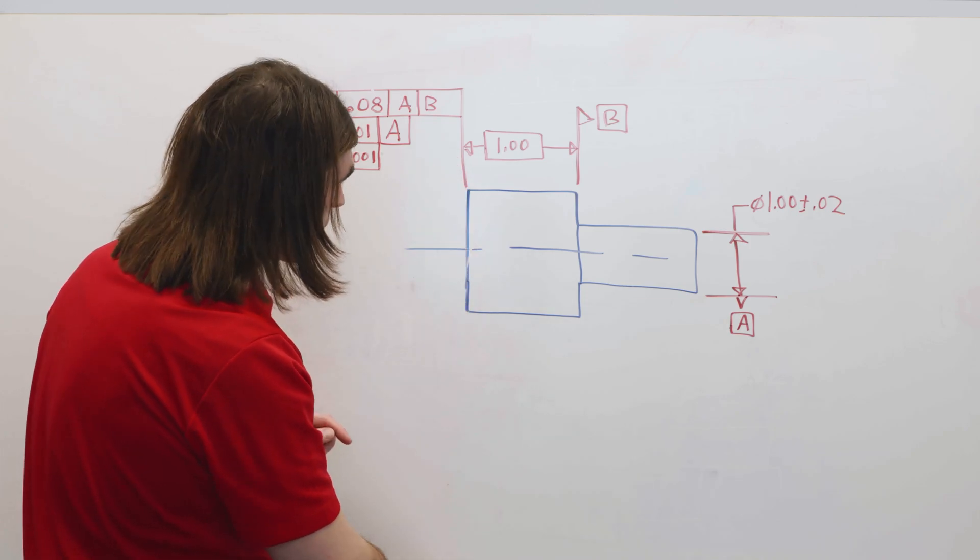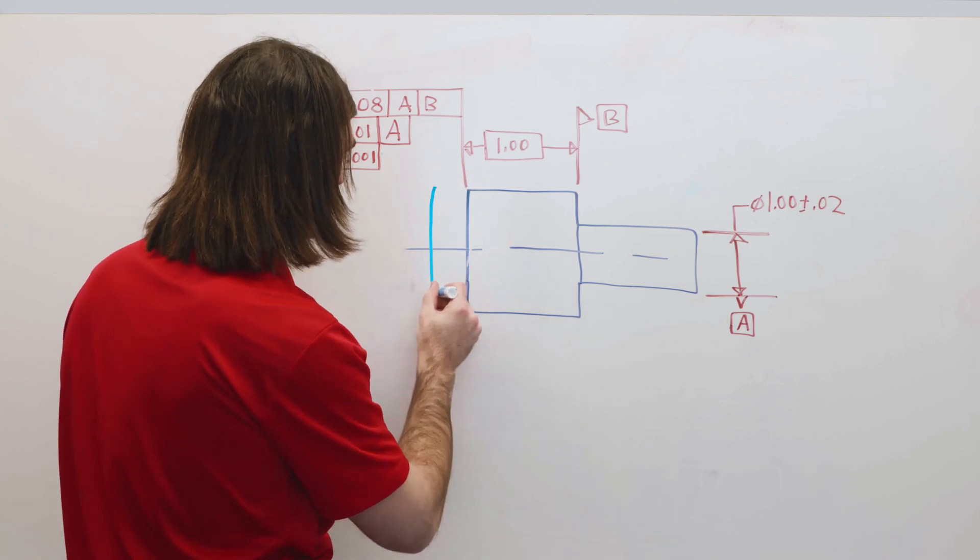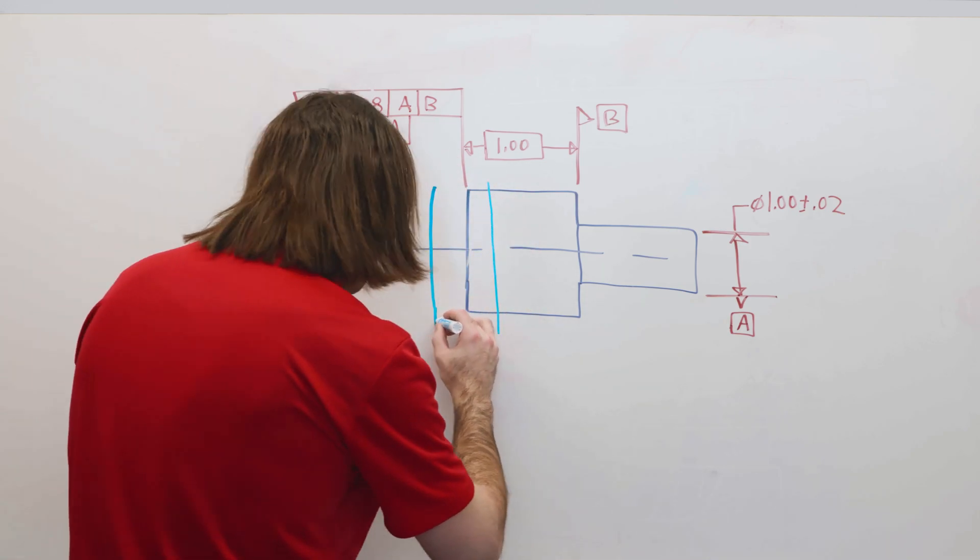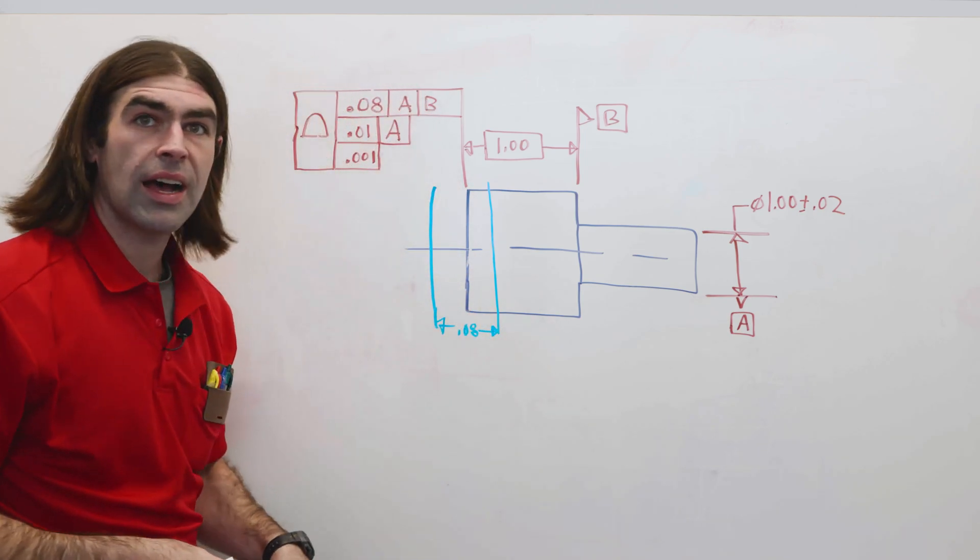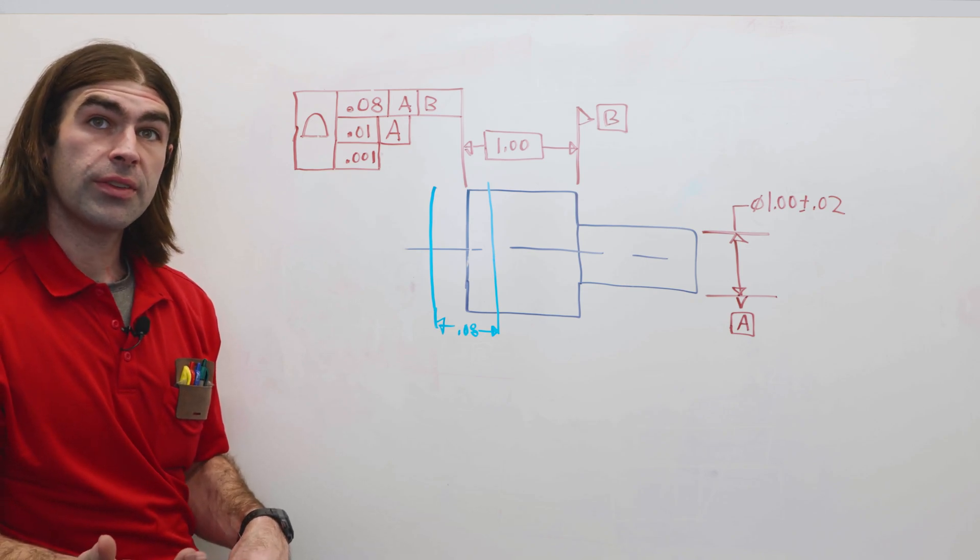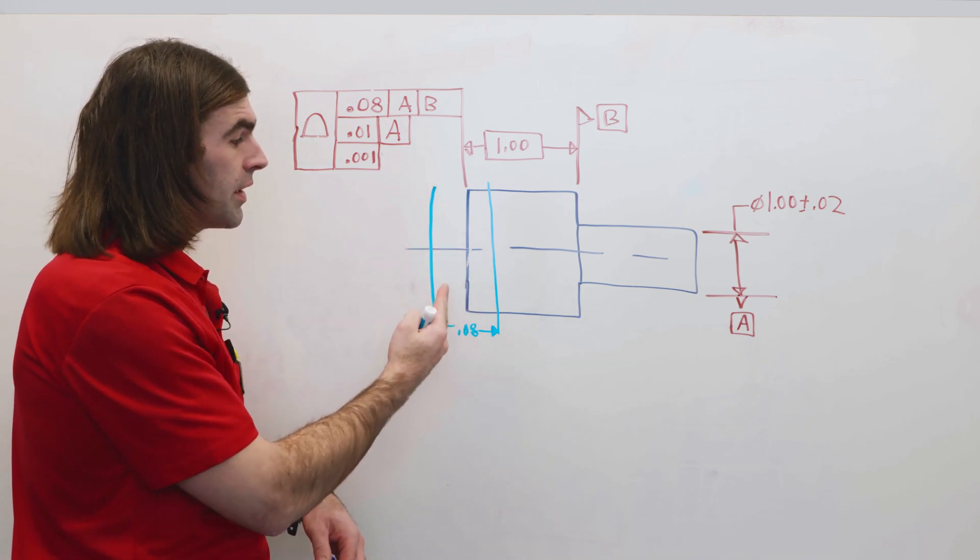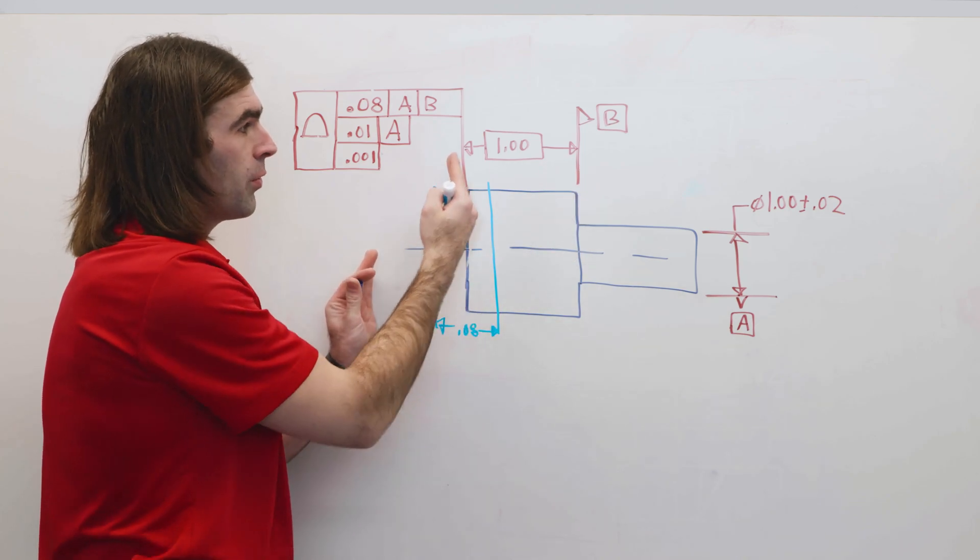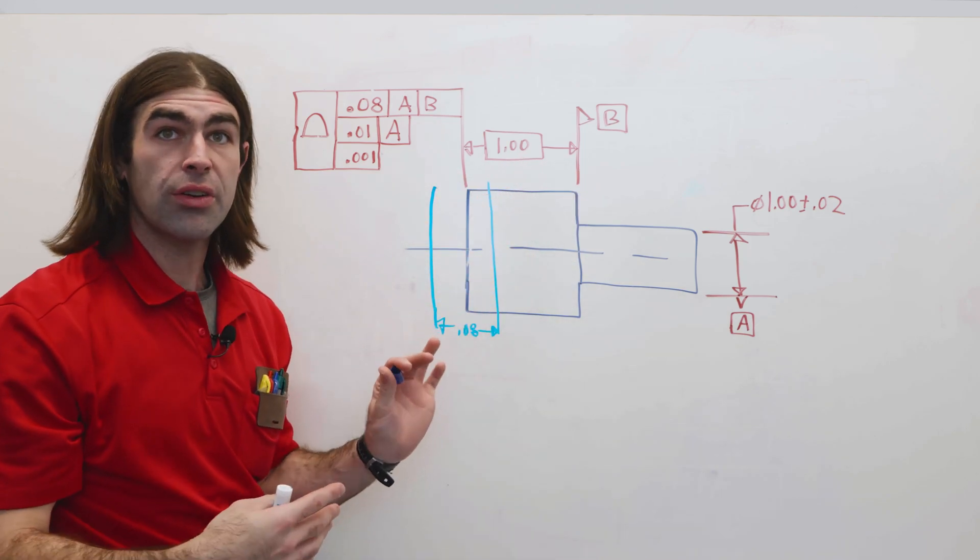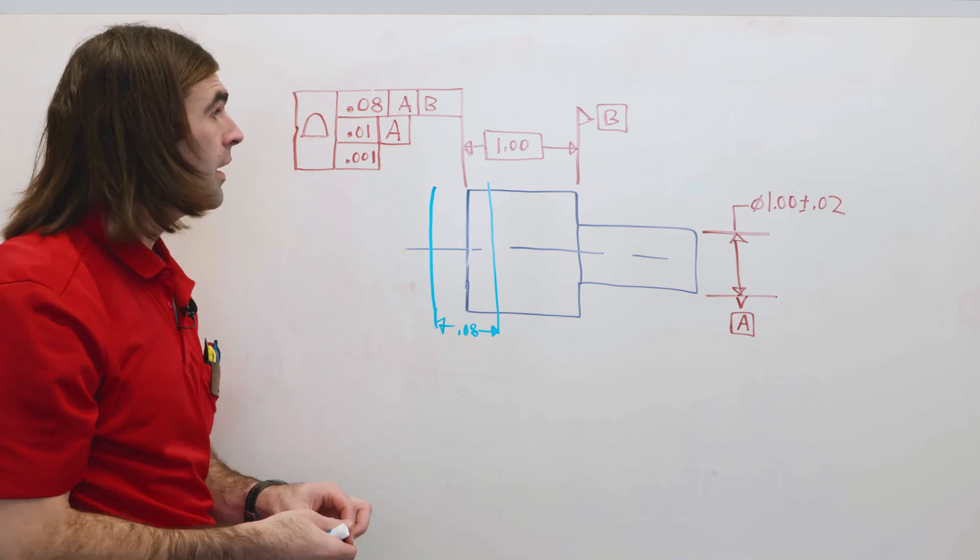So the surface we can imagine here has to lie within a tolerance zone of 80 thousandths that's perpendicular to A, and then the center of the tolerance zone is exactly one inch from B. No problem.